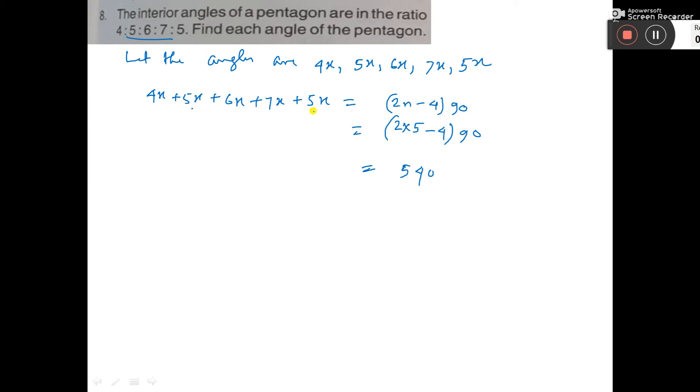This gives us 27x. So x is equal to 540 ÷ 27, which equals 20 degrees.